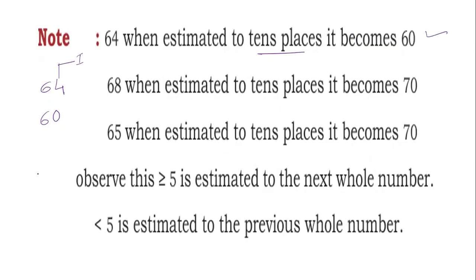For 68, the unit digit is 8, so this comes in the second case — digits 5, 6, 7, 8, or 9. Add 1 to the tens place: 6 plus 1 is 7. Put 0 in unit place. The answer is 70.